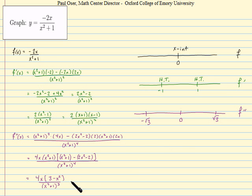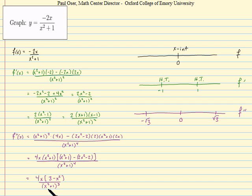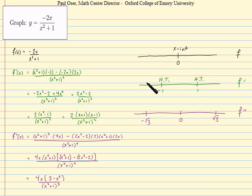To find all places where the second derivative could change sign, I also want to know where it could be undefined. But looking at the denominator, x squared plus 1 is always greater than or equal to 1, so the second derivative is always defined. That leaves us ready to look at the signs of each interval, and it will be useful to do the same for the intervals on the lines above.